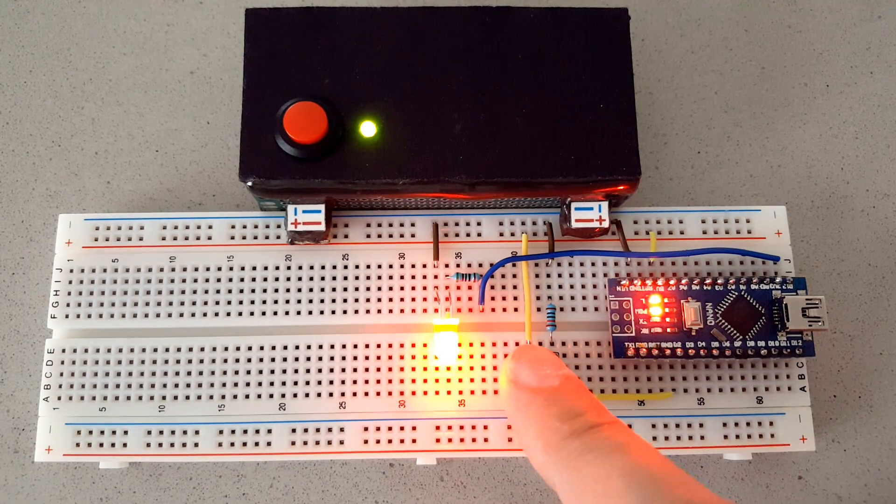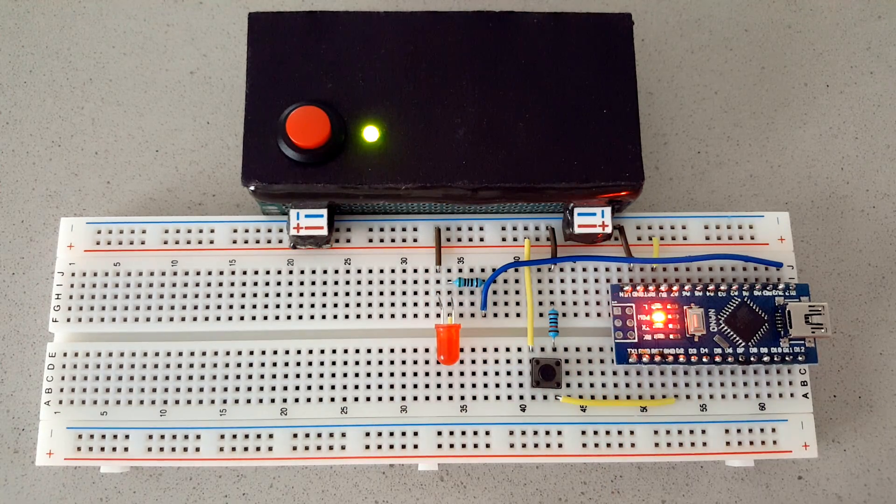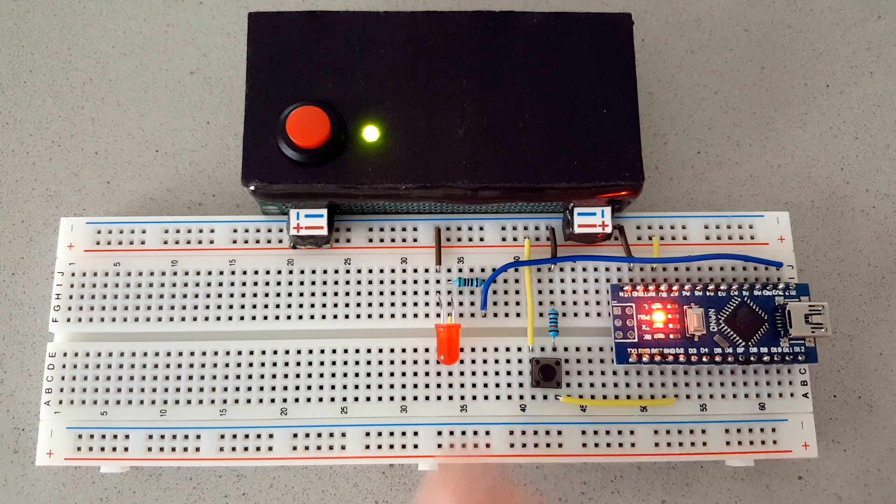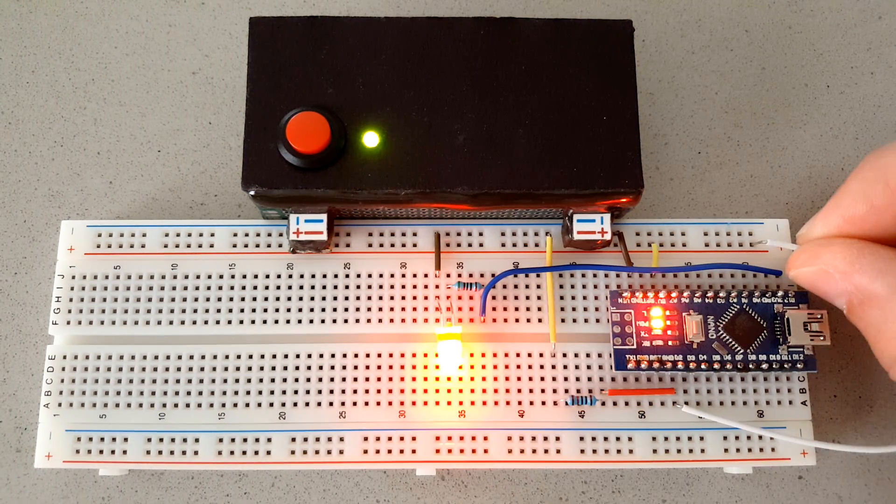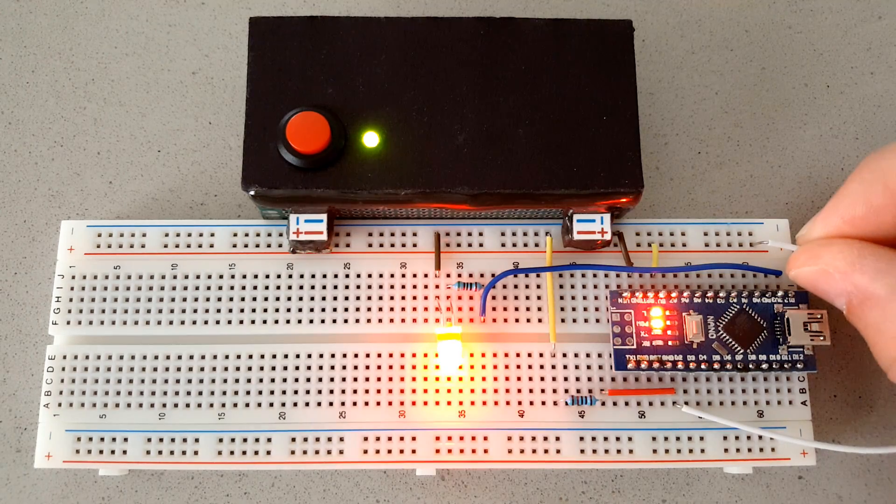Resistors are also widely used to pull up or pull down an input pin. Let's say we have this Arduino with pin 2 as an input, and it has a simple sketch that will turn on the LED on pin 13 if pin 2 is high, and turn it off if the input is low.